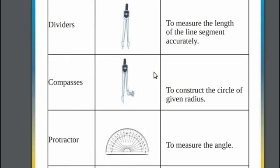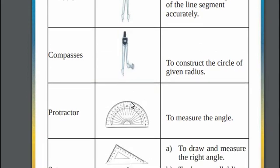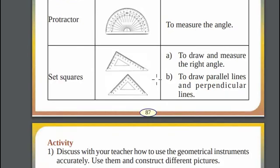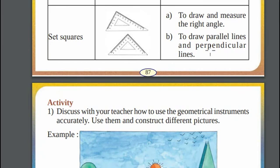Compass. Compasses are used to draw circle of a given radius. Protractor used to measure the angle between two points. Set squares are generally used to draw parallel lines and perpendicular lines. You can also find the perpendicular length using set squares.